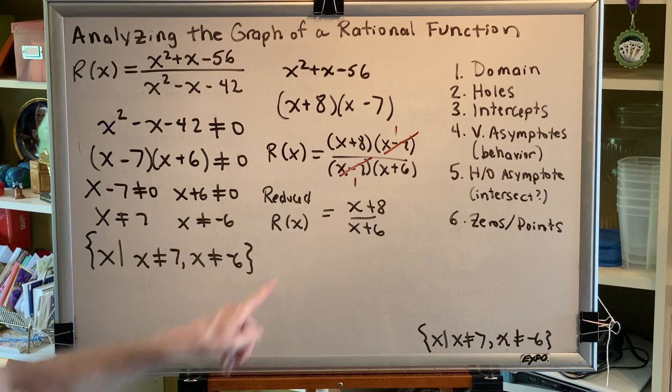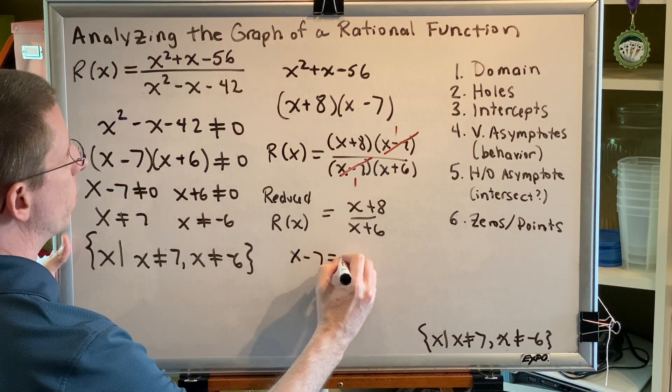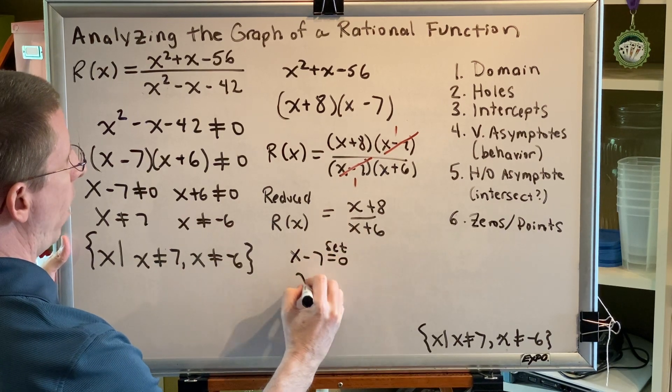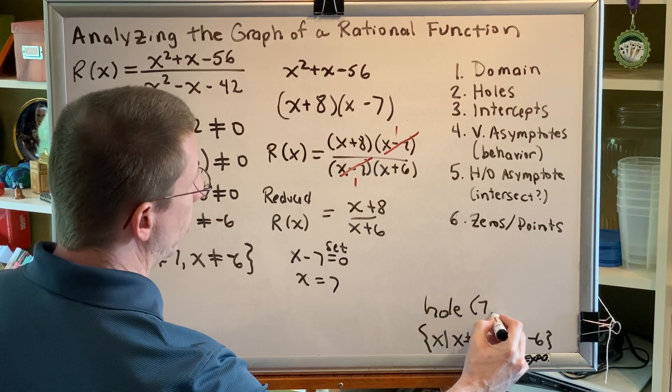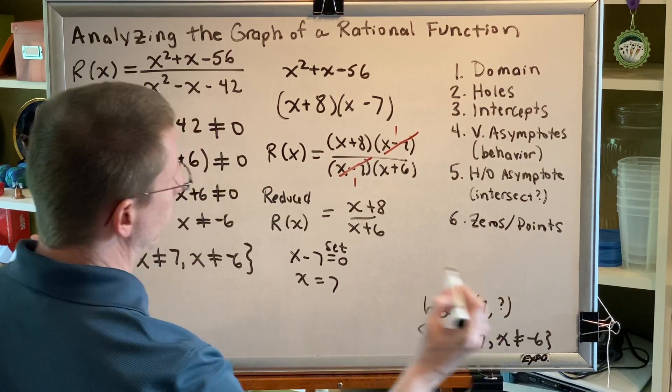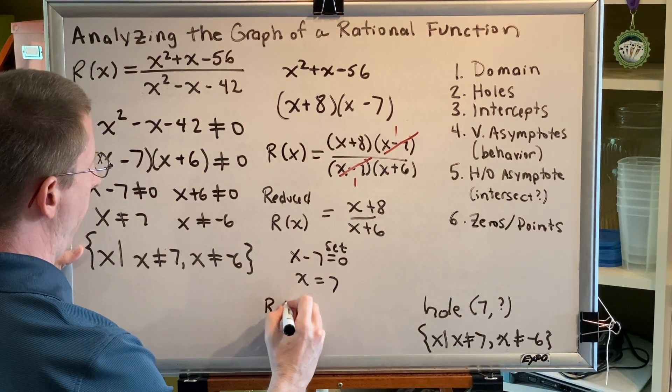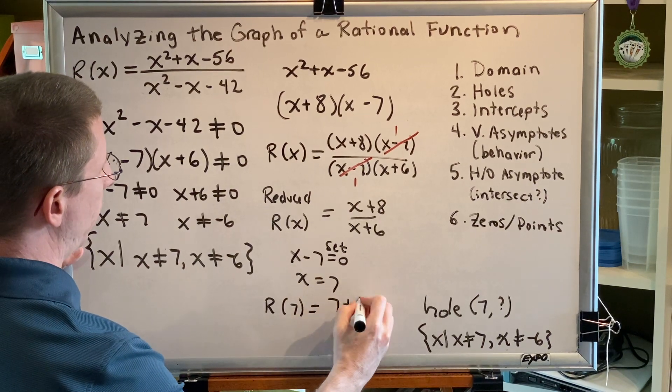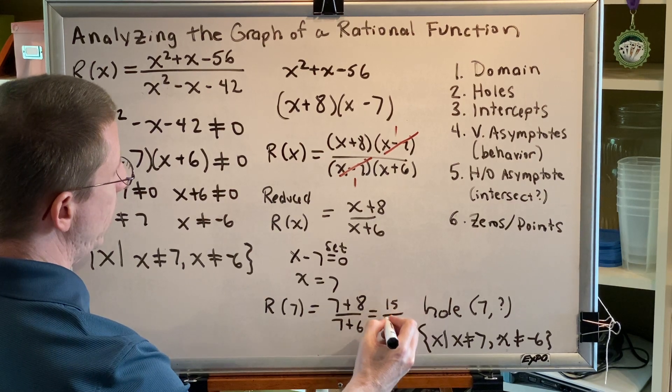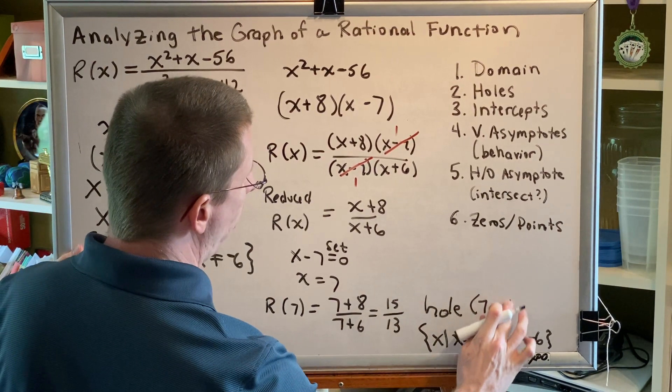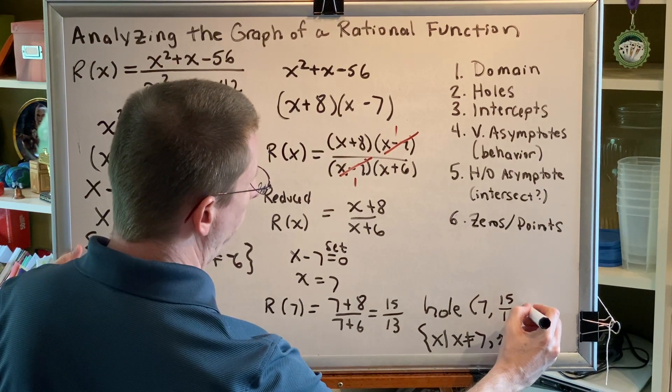Now let's find the hole. Set our canceled factor equal to 0. x minus 7 equals 0, and therefore x equals 7. So we will have a hole in our graph at 7 comma something. To find the y coordinate of the hole, we plug into our reduced r of x. So r of 7 is equal to 7 plus 8 over 7 plus 6, which is the fraction 15 over 13. So the location of our hole will be at 7 comma 15 over 13.